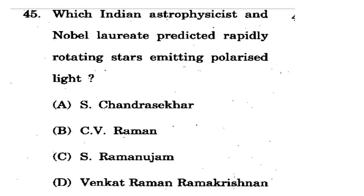Question 45: Which Indian astrophysicist predicted that rapidly rotating stars emit polarized light? Options: S. Chandrasekhar, S.V. Raman, S.V. Ramanujan, Venkat Ramakrishnan. The correct option is A - S. Chandrasekhar. He predicted that rapidly rotating stars emit polarized light, which is related to his Nobel Prize-winning work.